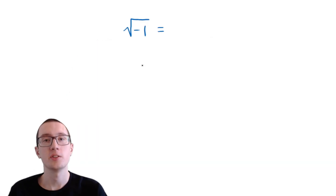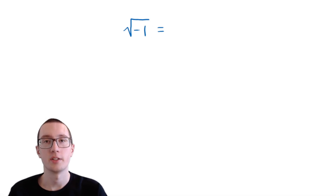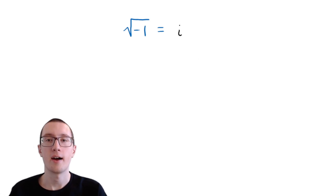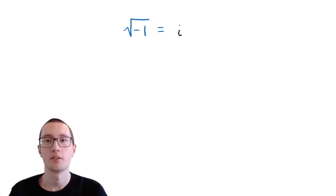So basically, what is the square root of negative 1? Well, you can't do that in real numbers. But the square root of negative 1 is going to be a new unit, and we're going to call it i. The letter i always means the square root of negative 1. Always. It's not going to mean anything else.